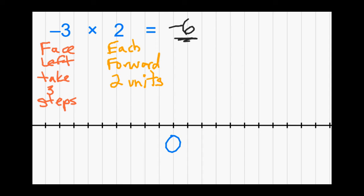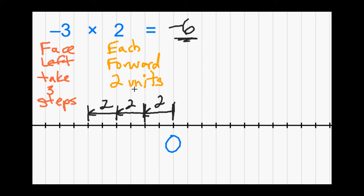On our number line we start at zero. Negative 3 tells us we're facing the negative direction and we take three steps, each two units forward. But since we're facing left, we end up at negative 2, negative 4, negative 6. We faced left, each step was two units forward in that direction, and we ended at the correct spot of negative 6.